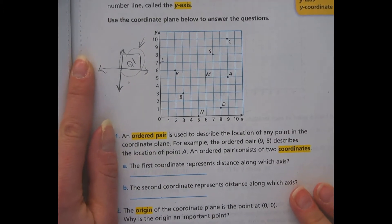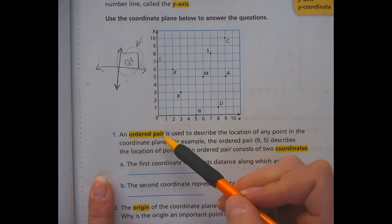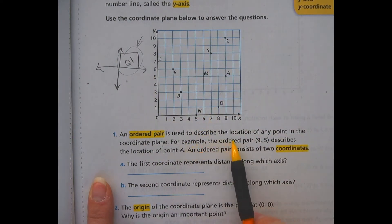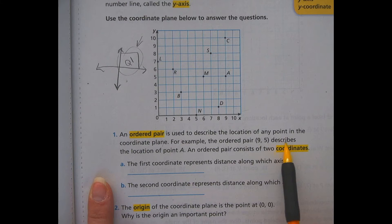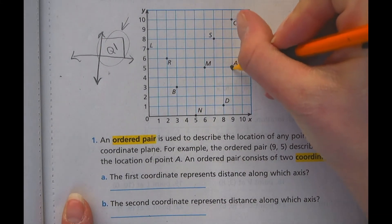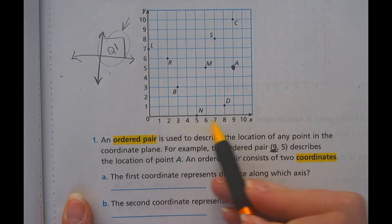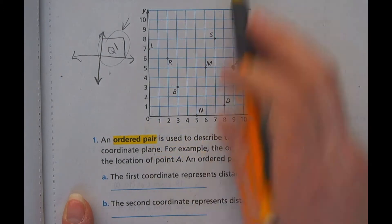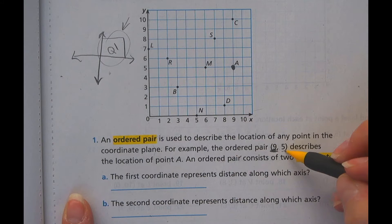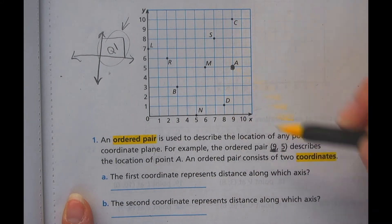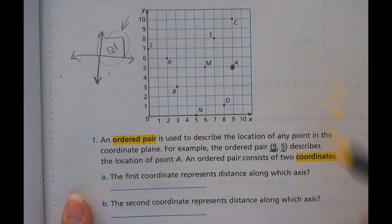We're going to now move into some vocab on ordered pairs, a really important word for you to understand. It's used to describe the location of any point in the coordinate plane. For example, the ordered pair (9, 5) describes the location of point A. So if I find point A here, 9, 5. If you notice, the first coordinate here refers to where it's at on the x-axis. So you go across, then you go up. So across 9, and then 5 is up. So up 5, and that's where your point is. It consists of these two coordinates, 9 and 5. That's a coordinate pair.